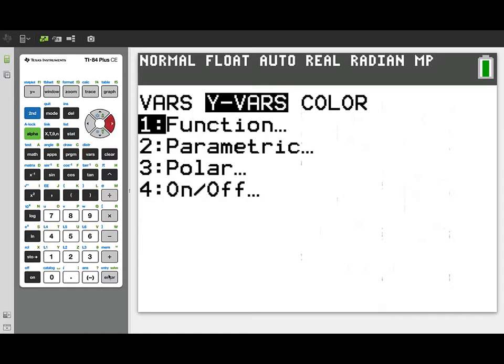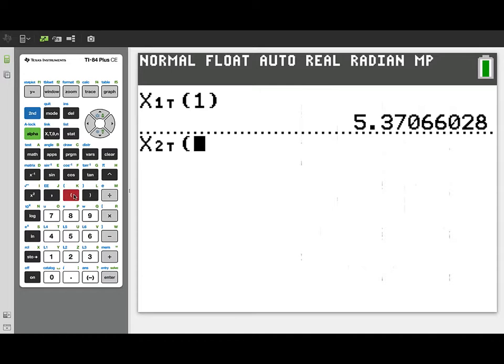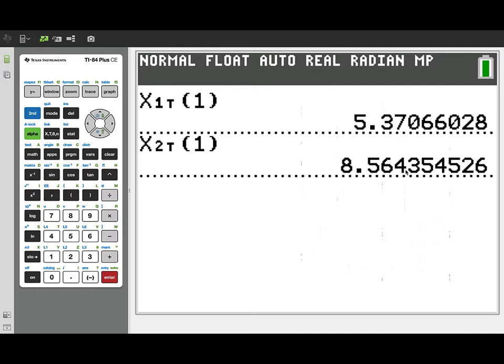For particle Q, similarly, we go back, retrieve the parametric y variables. And there's x2t, we'll evaluate it at t equals 1. And we'll get the position of particle Q at that time is 8.564.